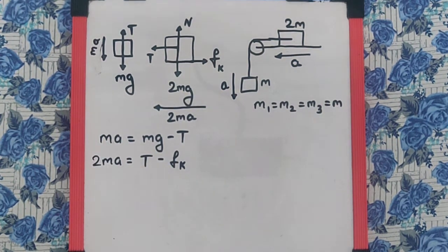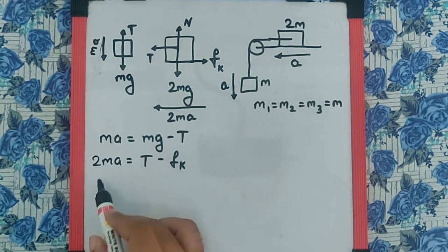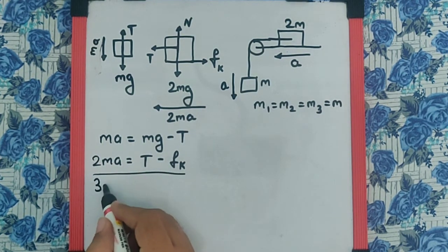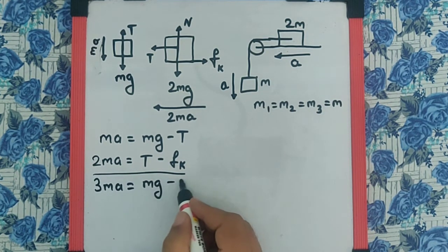We are interested in the acceleration, not the tension, so the best thing is to add both equations to get rid of the tension. When we add them, the tension gets cancelled, we get 3MA equals Mg minus the friction.